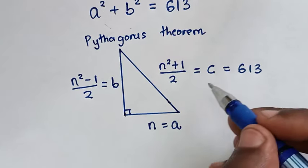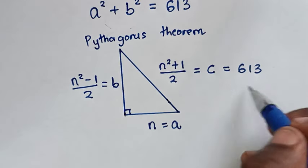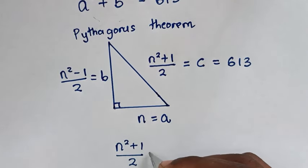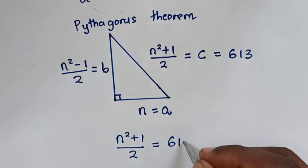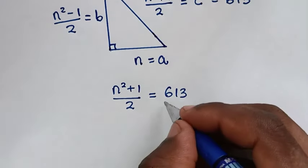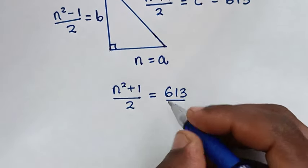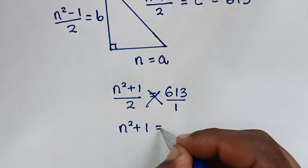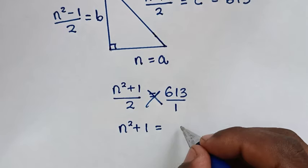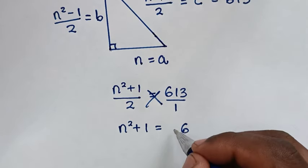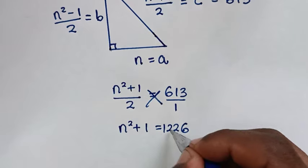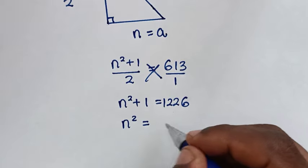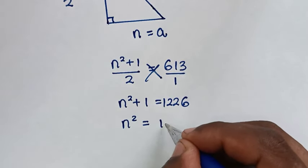Now to get n, we set the expression for c equal to 613. So (n squared plus 1) over 2 is equal to 613. We cross multiply, giving us n squared plus 1 is equal to 2 times 613, which is 1226. Then we take the 1 to the other side, so n squared is equal to 1225.